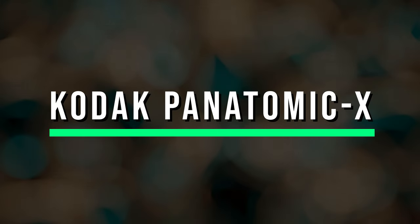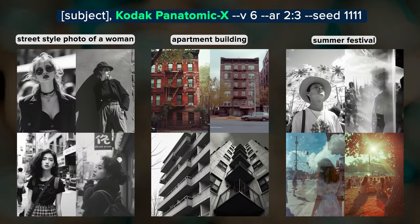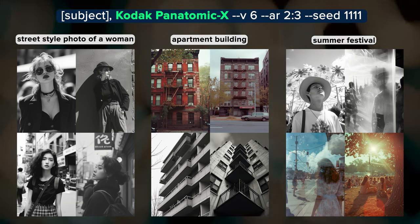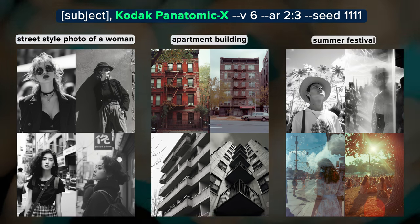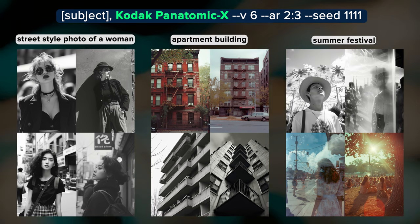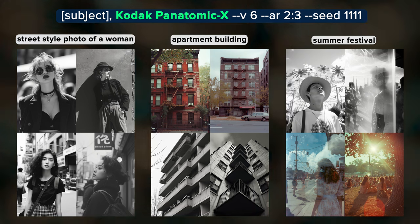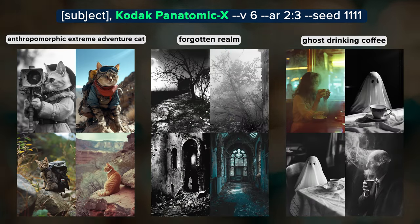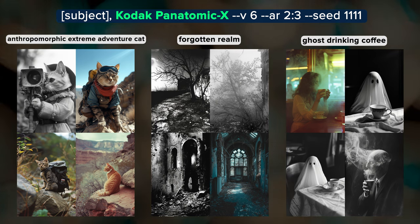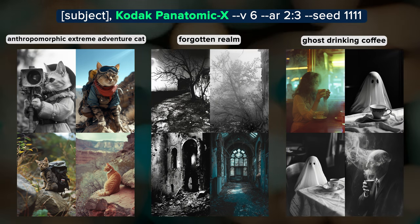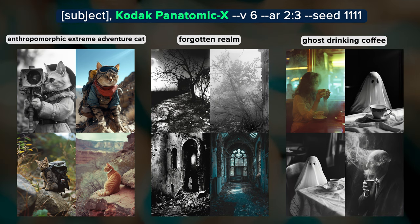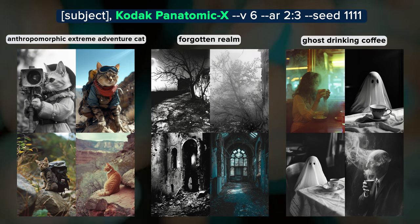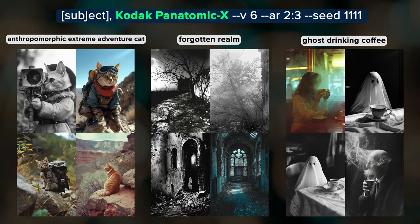Kodak Panatomic-X was a black and white film known for its fine grain and high resolution, popular in the mid-20th century and favored for its versatility and sharpness. The results are aesthetically pleasing, and it's interesting that there's a bit of a double exposure effect in a few of the summer festival results. Although Kodak Panatomic-X is a black and white film, Midjourney won't always give you black and white images. If you want to force black and white results, just add 'black and white film' to the prompt. With the other three subjects we get about 50/50 black and white versus color, and I really like the aesthetics especially for the adventure cat and the ghost drinking coffee.